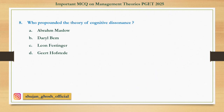Question number 8: Who propounded the theory of cognitive dissonance? Option A: Abraham Marshall. B: Daryl Bam. C: Leon Festinger. D: Geert Hofstede. Answer is Leon Festinger.